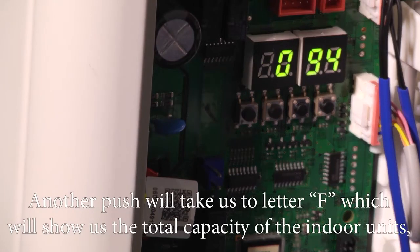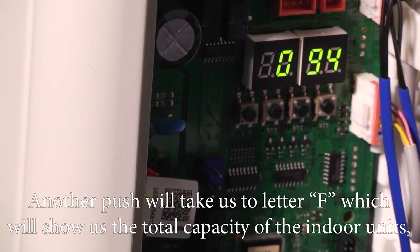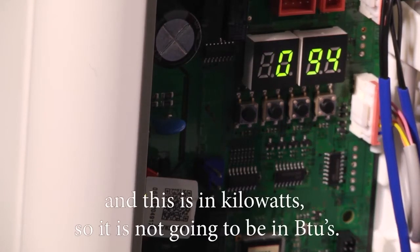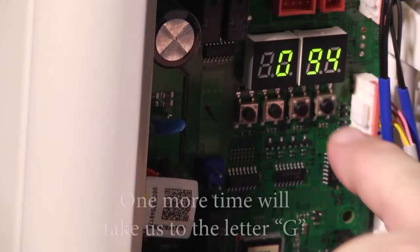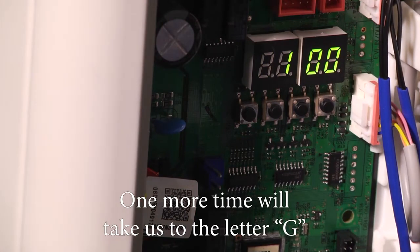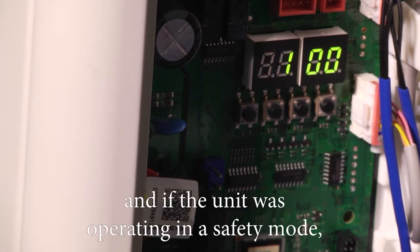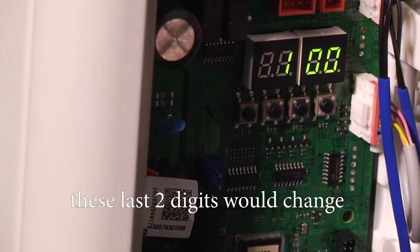Another push will take us to letter F, which will show us the total capacity of the indoor units, and this is in kilowatts, so it's not going to be in BTUs. And then one more time will take us to the letter G. If the unit was operating in a safety mode, these last two digits would change to let you know what safety mode you're operating in.